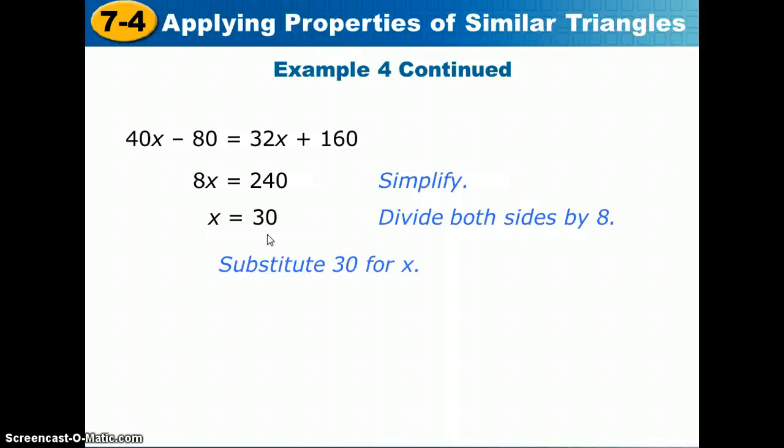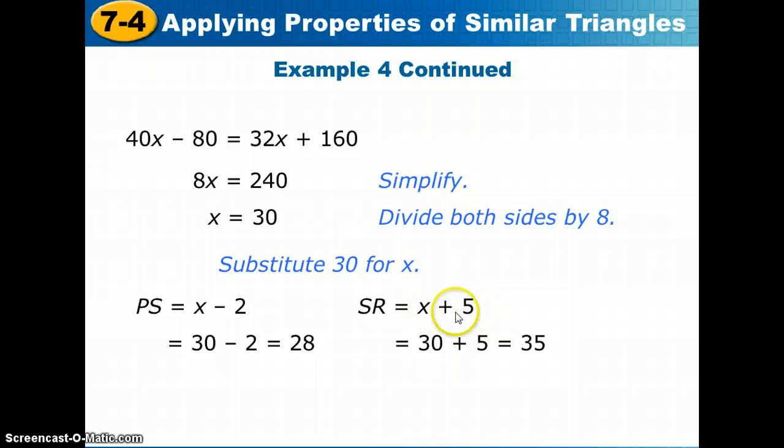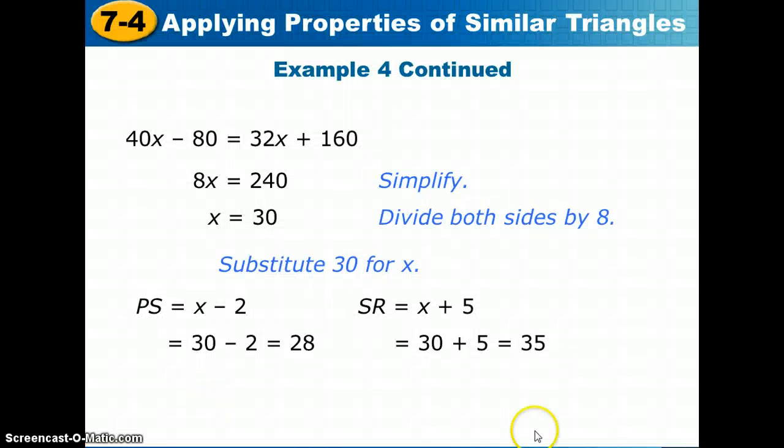But remember, we're supposed to find the two portions of that third side. So we're going to substitute 30 for x in both of those expressions. PS was x minus 2, so 30 minus 2 is 28. And SR is x plus 5, so 30 plus 5 is 35. If you wanted to check these, we could check the ratio of these two and the ratio of the other two sides, and they would give you the same ratio when you simplified.